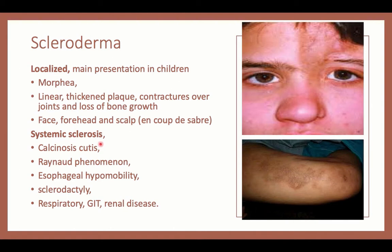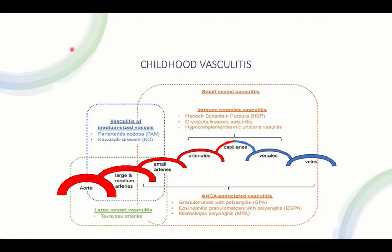Systemic sclerosis has manifestations including calcinosis cutis, Raynaud's phenomenon, esophageal hypomotility, sclerodactyly, and respiratory, GI, or renal disease. It has specific antibodies on workup, is associated with systemic manifestations, and treatment, if required, is in the form of corticosteroids and immunosuppressants.